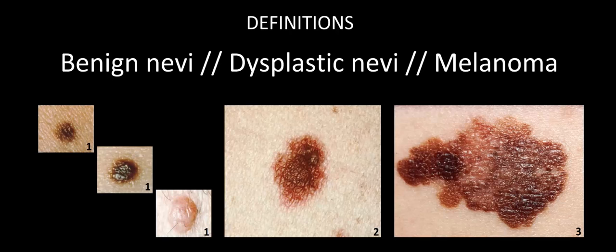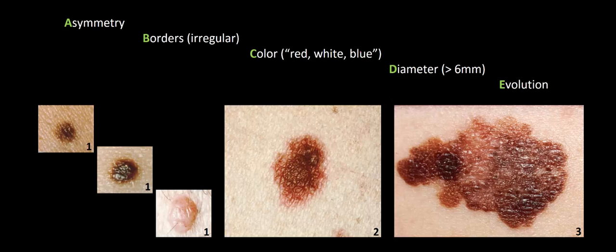In this video I want to start off where we left off in the last video and now give you a more systematic way to help you clinically differentiate benign nevi from more potentially malignant lesions like dysplastic nevi and melanoma. There's a very easy to remember mnemonic that helps dermatologists, primary care doctors, and even patients more systematically differentiate benign pigmented lesions from more malignant pigmented lesions. This mnemonic is known as the ABCDE mnemonic, and each letter stands for a different characteristic — essentially red flags that clue us into a potentially malignant process in a pigmented lesion.